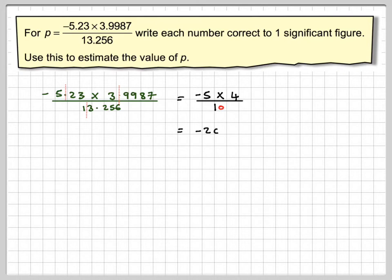Now, minus 5 times 4 is 20, and divided by 10, minus 20 divided by 10 is minus 2.